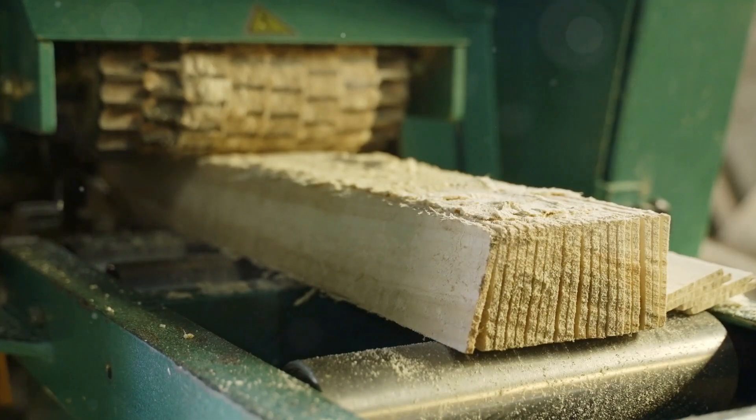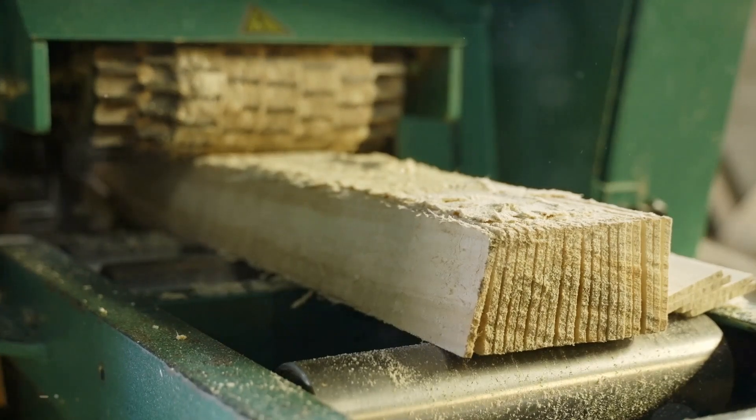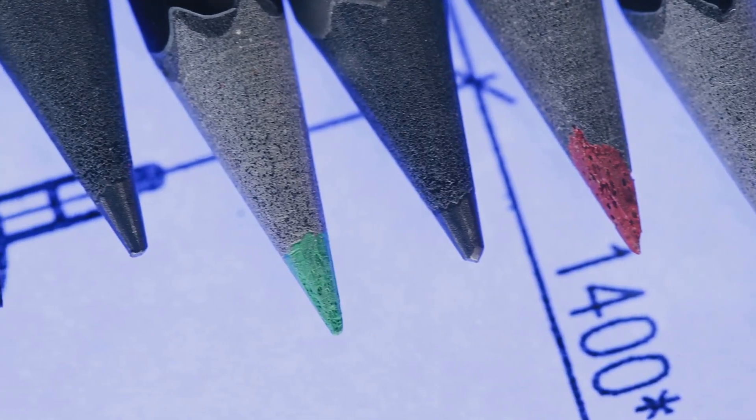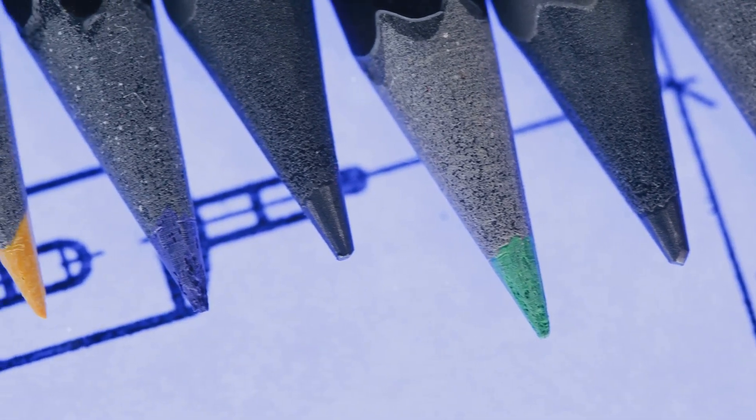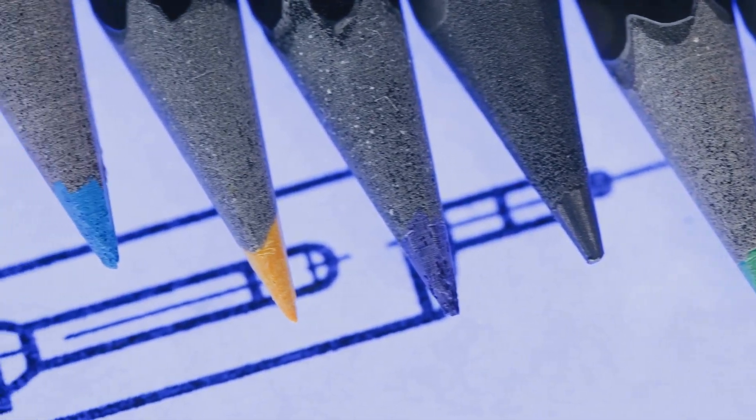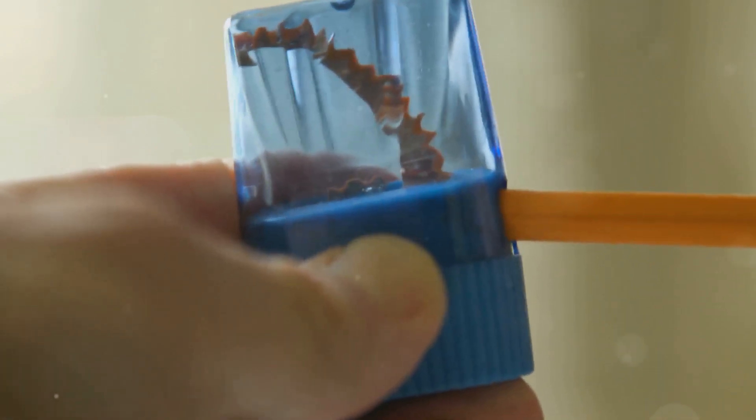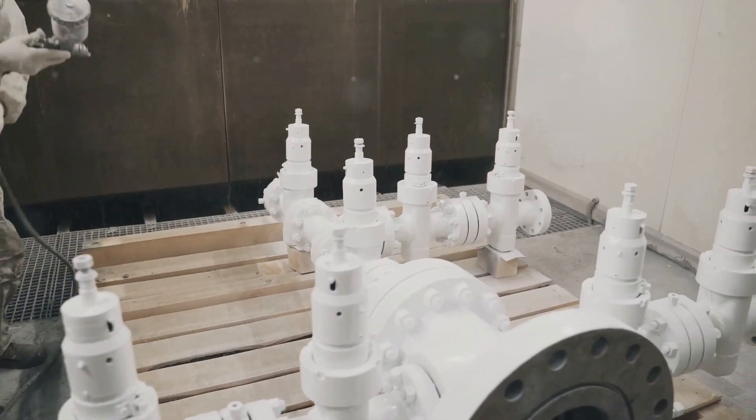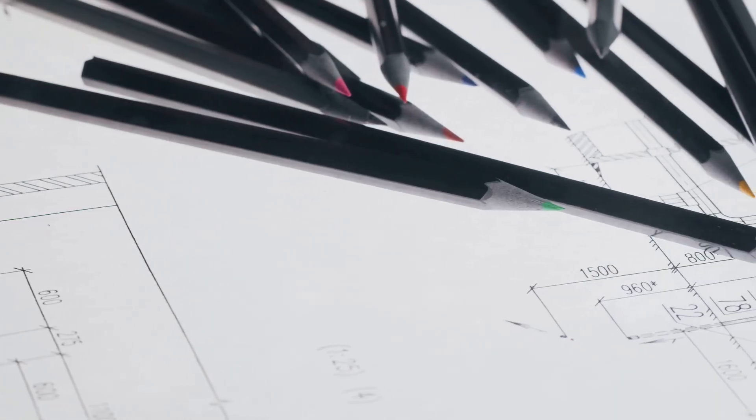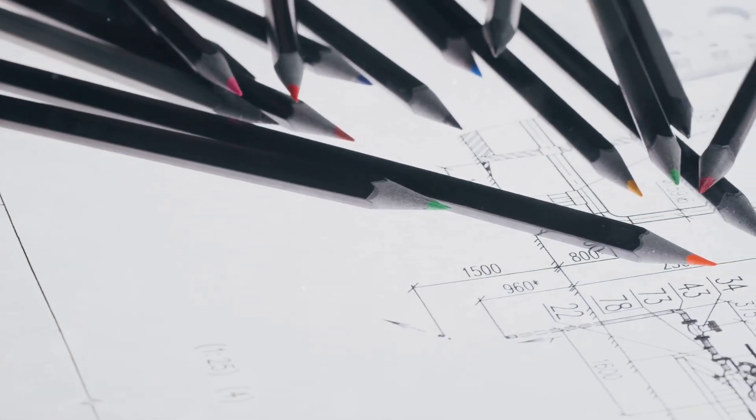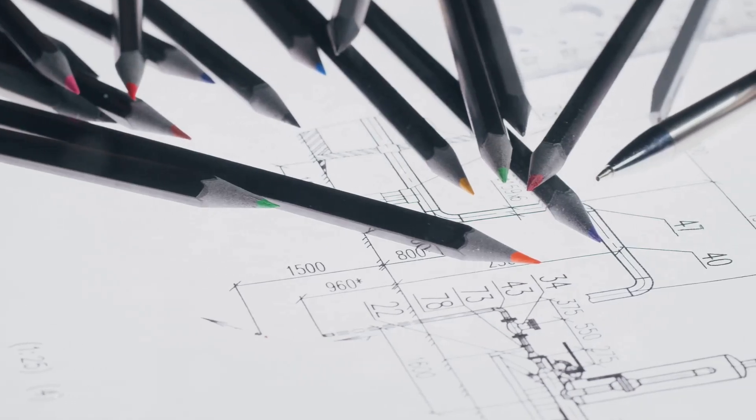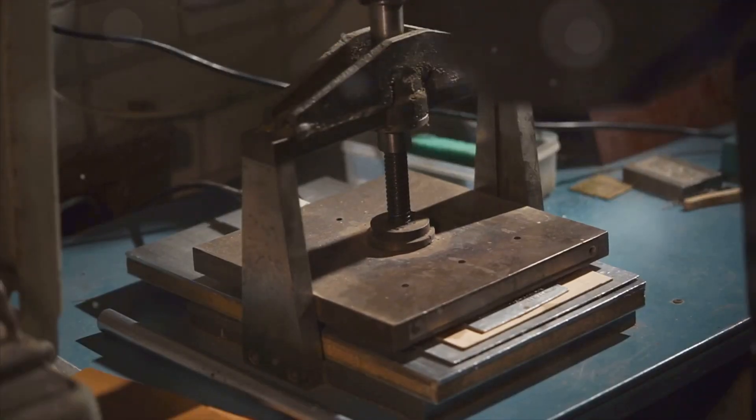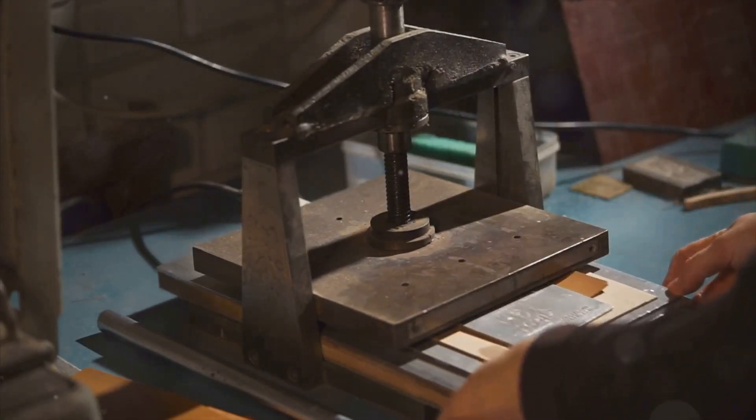Finishing touches. The journey from raw materials to finished pencil is nearing its end. The pencils, now in their familiar form, undergo a series of finishing touches to enhance their appearance and functionality. The pencils are first sanded to smooth out any rough edges and create a comfortable grip. They are then coated with a layer of lacquer or paint, not only for aesthetics but also to protect the wood from moisture and wear. Some pencils are stamped with the manufacturer's name, the pencil grade or other decorative markings.